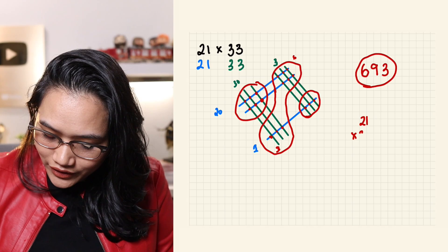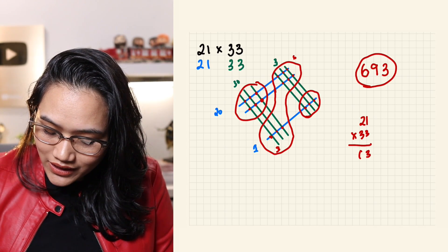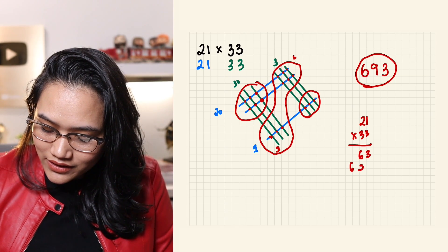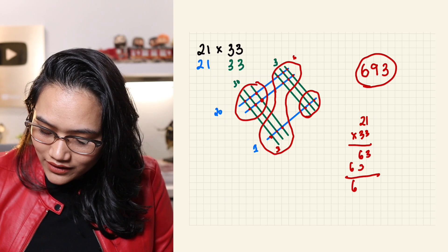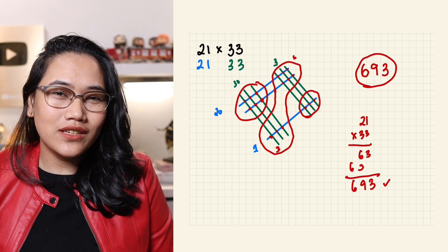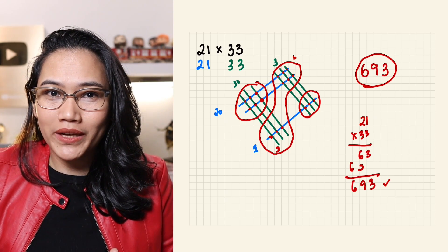To check, 21 times 33 using the long method: 3 times 1 is 3, 2 times 3 is 6, 1 times 3 is 3, 2 times 3 is 6. And if you add this: 6, 9, 3. We're correct. Now, this is actually a simple problem when it comes to this technique. Let's try something a little more complicated. What if there's a number that goes over 10?